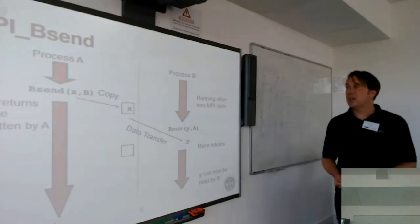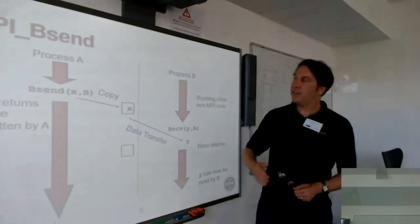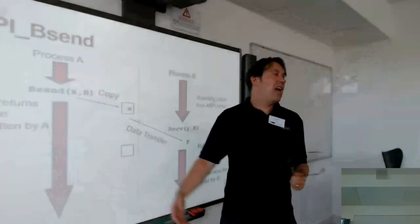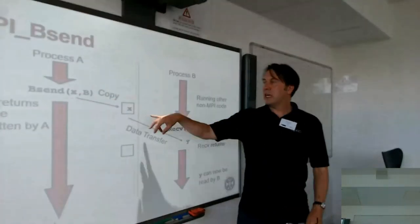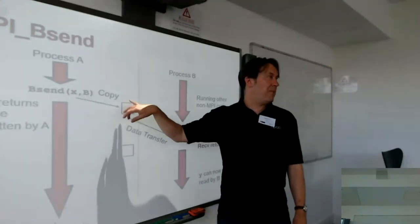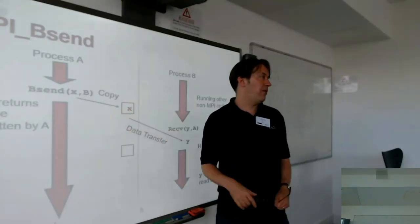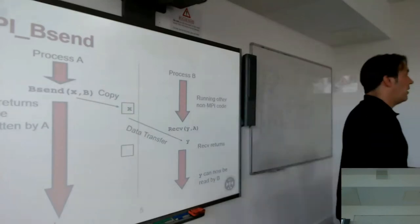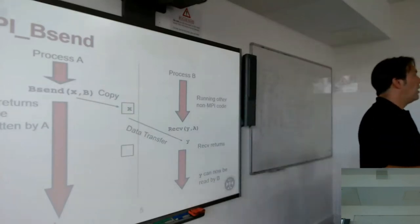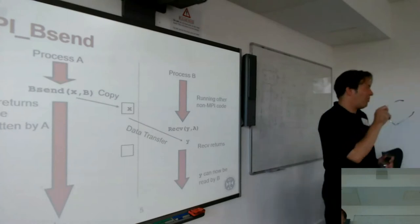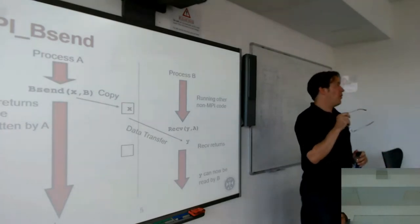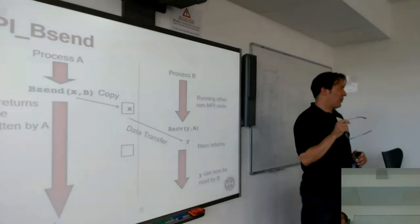Process A just carries on doing what it likes — there's no synchronization in time between A and B. That's why it's called an asynchronous send. At some point Process B issues a receive, the data is transferred, the receive returns, and Y can now be read by B. We've achieved the same thing, and this looks better because there wasn't all this waiting around. The question is: where does the memory come from?